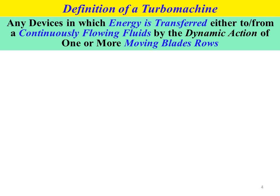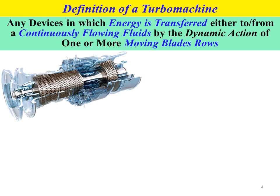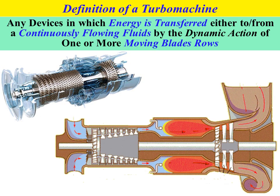Any device or system that fulfills all three keywords is considered a turbo machine. This figure shows a quarter-cut 3D drawing of a gas turbine engine, which consists of three main components: a compressor, combustion chambers, and a turbine. Referring to the definition, we want to determine whether this gas turbine engine is considered a turbo machine.